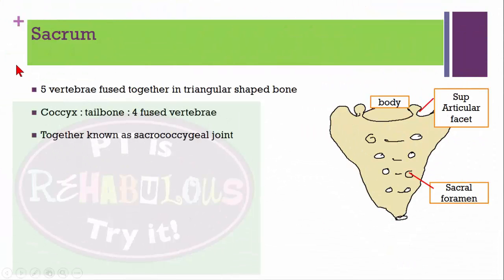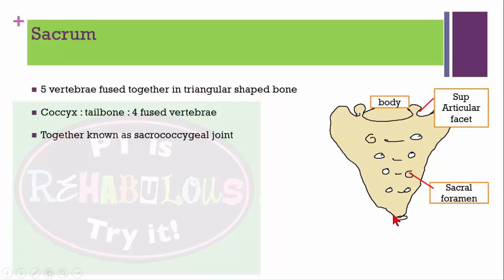Five vertebrae fused together in a triangular shape form the sacrum. The coccyx is the tailbone, made up of four fused vertebrae. The joint between the sacrum and coccyx is known as the sacrococcygeal joint.